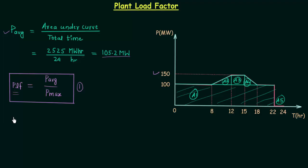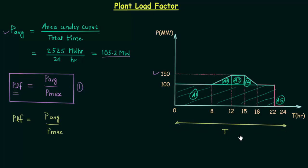I will explain the other way to calculate the plant load factor. PLF is equal to P average over P max. The total time is capital T, and I will multiply T to both the numerator and the denominator. In this way we have P average multiplied with T in the numerator and P max multiplied with T in the denominator. Now P average multiplied with T is equal to area under the curve.